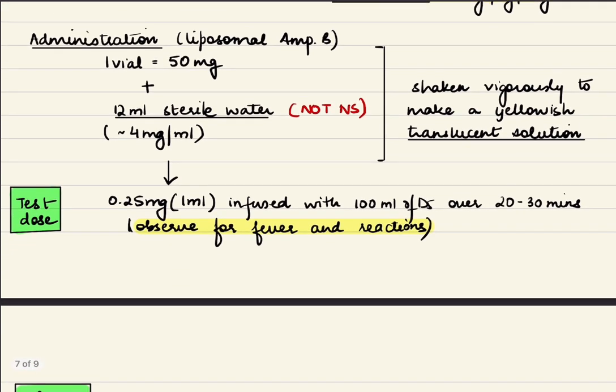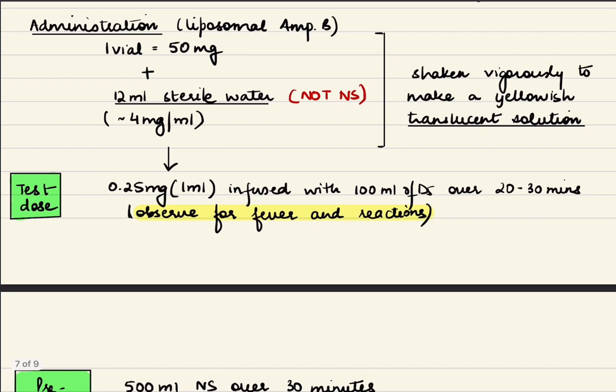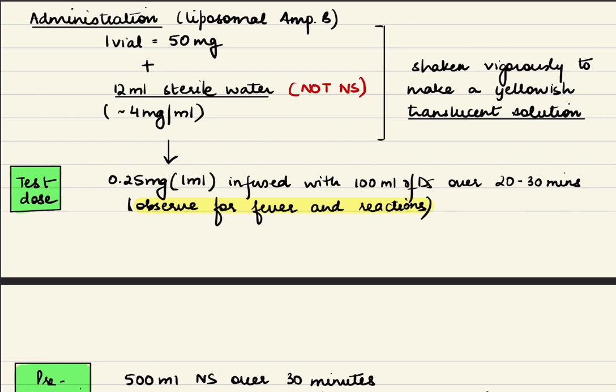Coming to administration of Amphotericin B, this is very important and every resident should know this. We will discuss administration of liposomal Amphotericin B mainly. One vial is 50 mg and we reconstitute it with 12 ml of sterile water, not normal saline. The solution becomes around 4 mg per ml after reconstitution. Shake this solution vigorously to make a translucent solution. Amphotericin B comes as a yellowish powder, so after reconstitution we make a yellowish translucent solution.